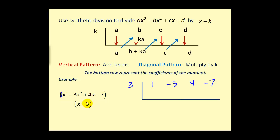I always find it easy to just take the opposite sign of what we see in the divisor. The process starts by bringing down the leading coefficient of one, then on the diagonal we multiply by k — three times one equals positive three. The vertical pattern is to add, so negative three plus three equals zero. Note this is different from long division where we subtracted; for synthetic division we add. Three times zero is zero. Diagonal pattern is to multiply by k — three times four equals twelve, and the result here would be positive five.